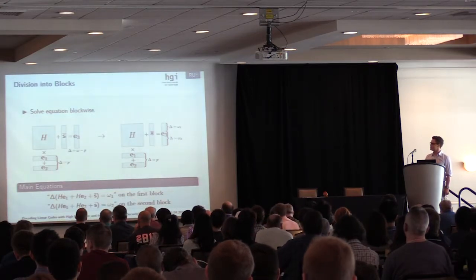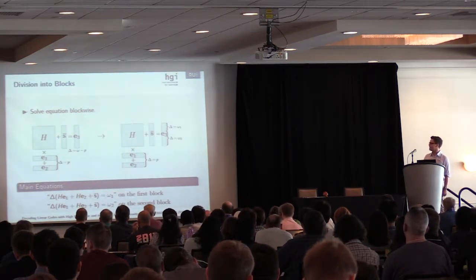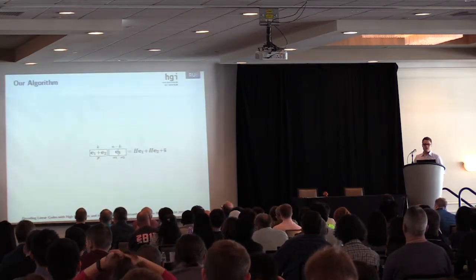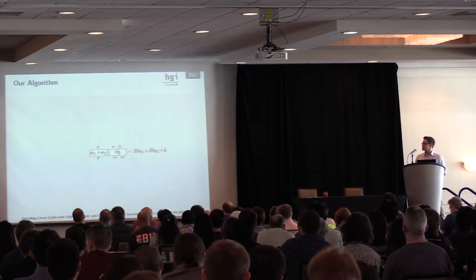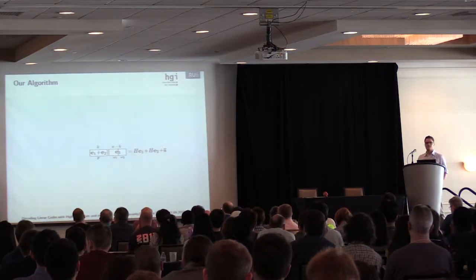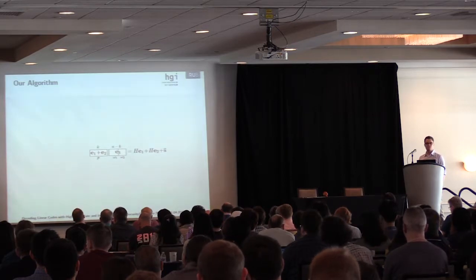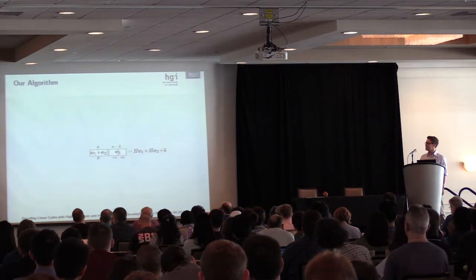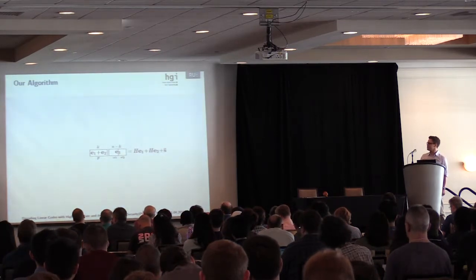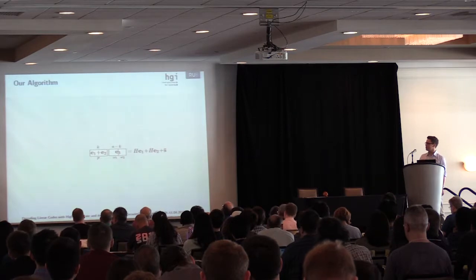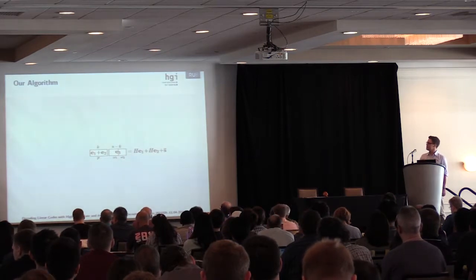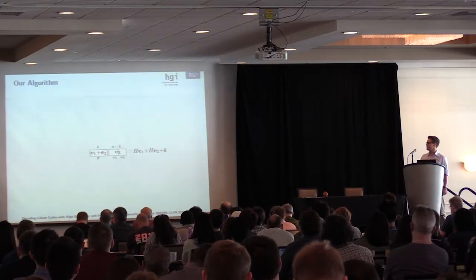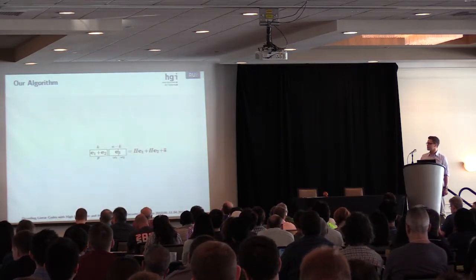As you can already see, there are many parameters which we have to optimize later: p, omega 1, and omega 2. The target vector our algorithm wants to construct looks like this. The first part is the sum of two vectors e1 and e2, which sum up to weight p and have length k. The second part is the vector e3, which is divided into two blocks of weight omega 1 and omega 2. Also note that we can write e3 as the sum of H1, H2, and S.